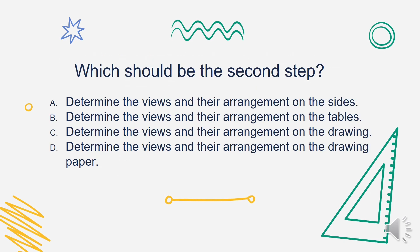Which should be the second step for constructing an orthographic drawing? Is it A. Determine the views and their arrangement on the sides, B. Determine the views and their arrangement on the tables, C. Determine the views and their arrangement on the drawing, or D. Determine the views and their arrangement on the drawing paper? The answer is Letter D: Determine the views and their arrangement on the drawing paper.